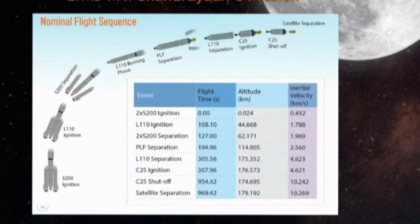Then the upper cryogenic stage, C25, ignites 2 seconds later and continues to burn for close to 650 seconds. During the operational regime of C25, the largest relative velocity addition takes place, increasing from 4.178 km per second to 9.804 km per second.